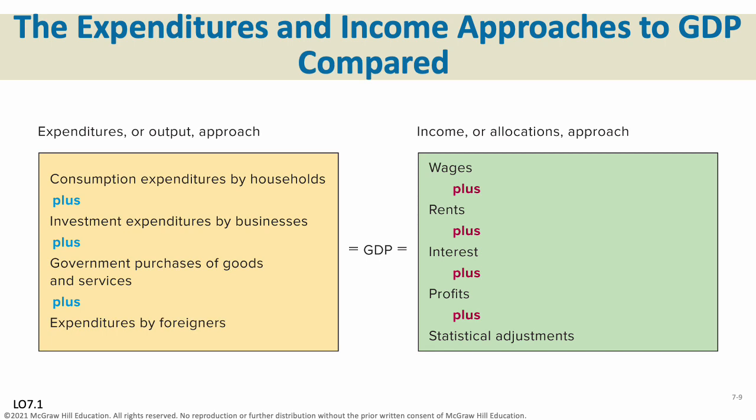The expenditure approach covers all household spending by private individuals, all business investment, all government spending, and all spending by foreigners within our borders — because GDP is the activity that goes on in our borders. The income approach covers all wages, all rents, all interest, all profits, plus statistical adjustments for things like time value of money. They are always going to equal each other, and that is an extremely important point — regardless of what approach you use, your answer is going to be equal.